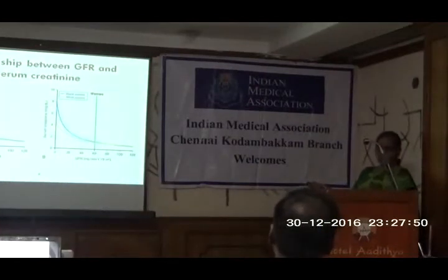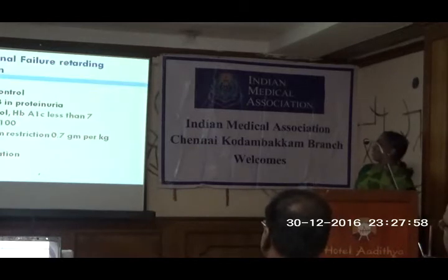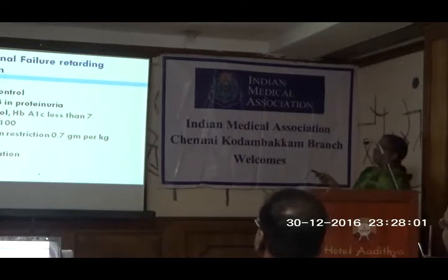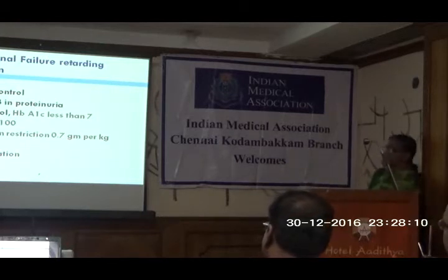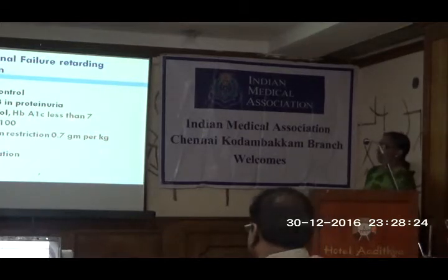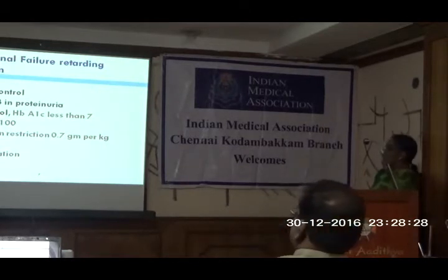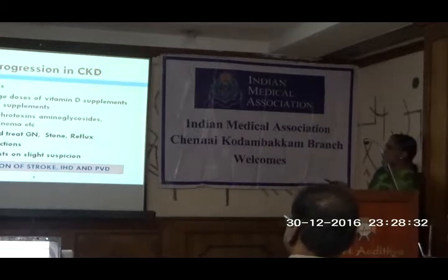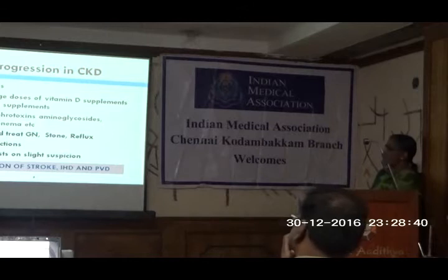Things we can do to halt the progression of CKD include keeping blood pressure under 130, using ACE inhibitors or ARBs in patients with proteinuric conditions like diabetes and other glomerular diseases, controlling diabetes to keep HbA1c less than 7, LDL cholesterol less than 100, dietary protein restriction to 0.7 to 0.8 grams per kg body weight, keeping BMI around 20 to 25, and smoking cessation. Additional measures include avoiding NSAIDs and educating patients about how important it is to avoid over-the-counter anti-inflammatory medications.